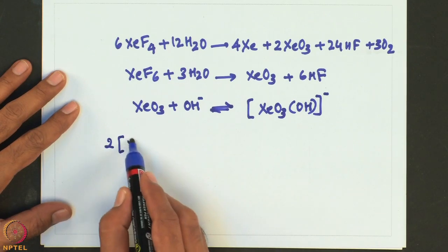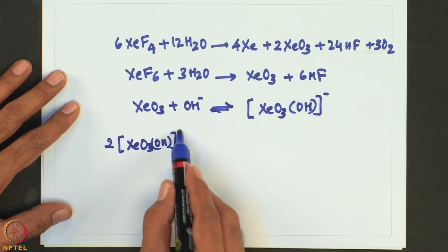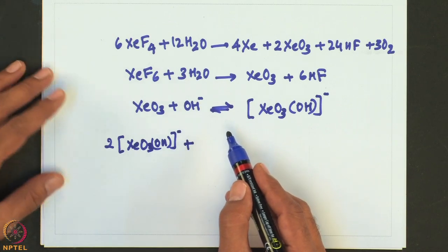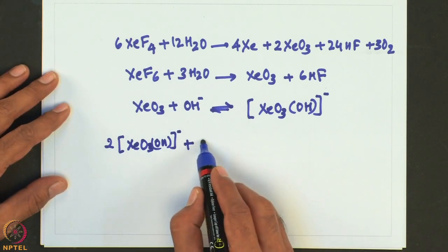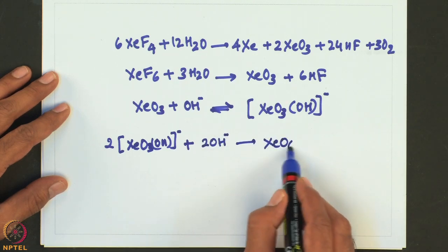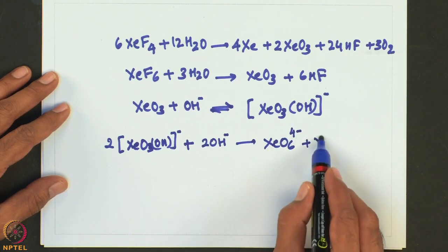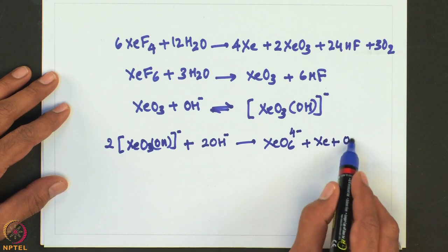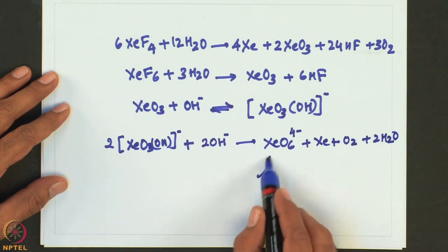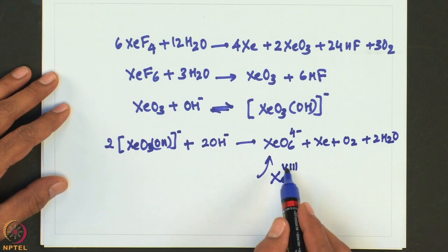For example, [XeO3(OH)]⁻ in aqueous solution gives [XeO6]⁴⁻ plus xenon gas plus O2 plus 2 H2O. Here xenon is in the +8 oxidation state in the perxenate product.